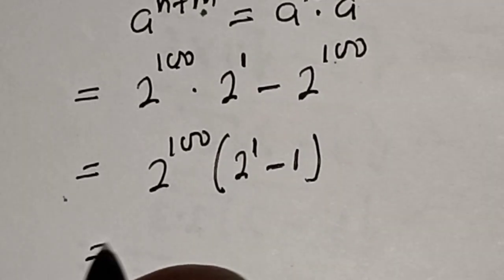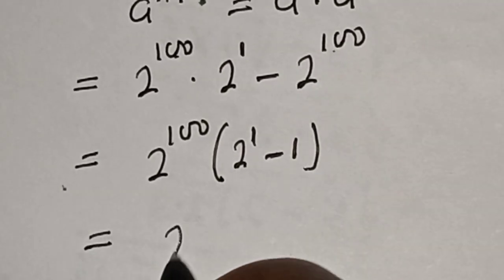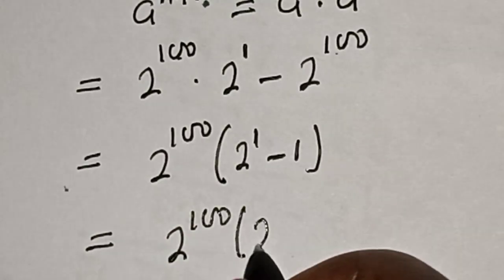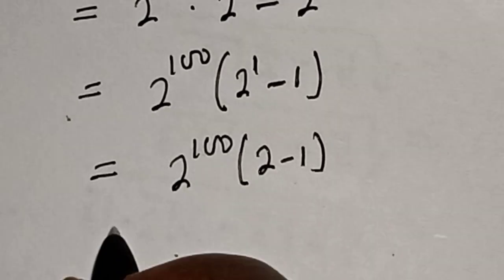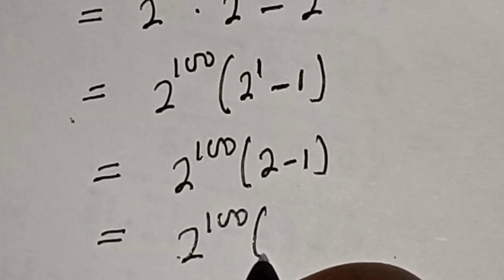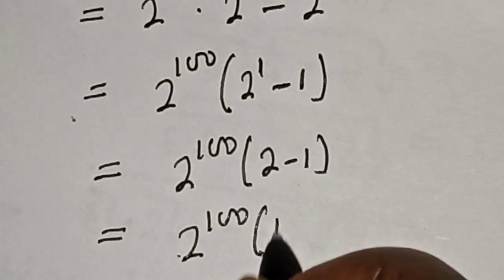So, this is equal to 2 raised to power 100, bracket, 2 minus 1 is 1.